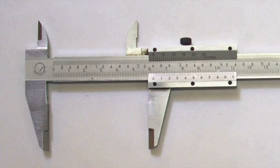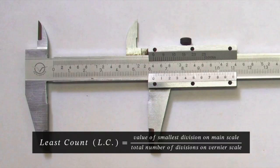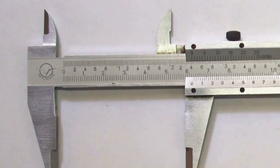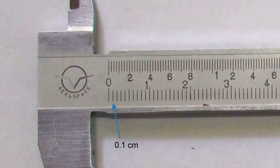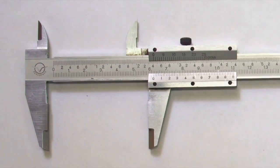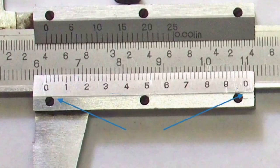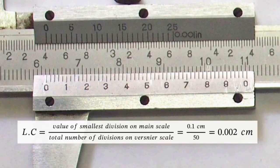Before we make any measurements with the calipers, we need to evaluate its least count, which is the smallest measurement that it can make. To find the least count, we divide the value of the smallest division on main scale by the total number of divisions on vernier scale, which in the present case is 0.1 cm on main scale and total 50 divisions on vernier scale, which is equal to 0.1 divided by 50, that is 0.002 cm.